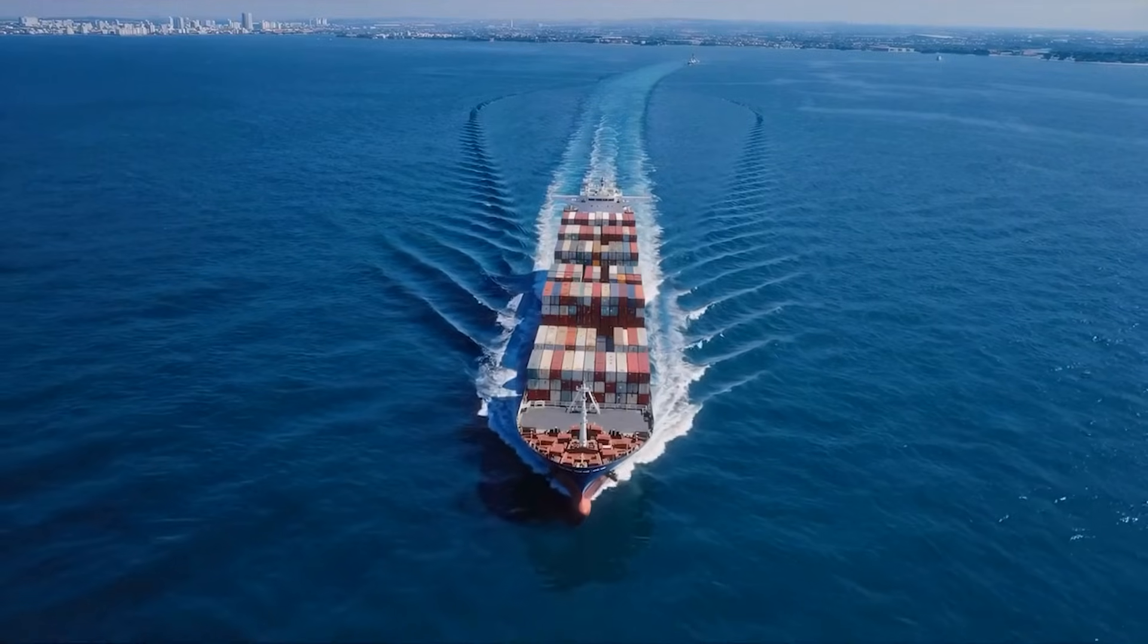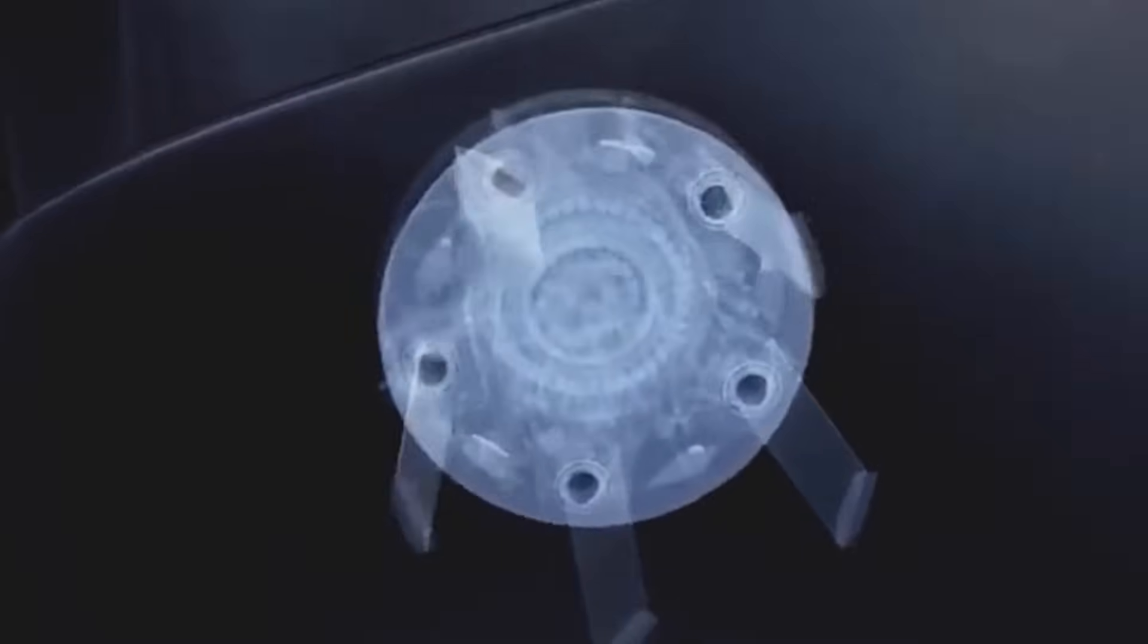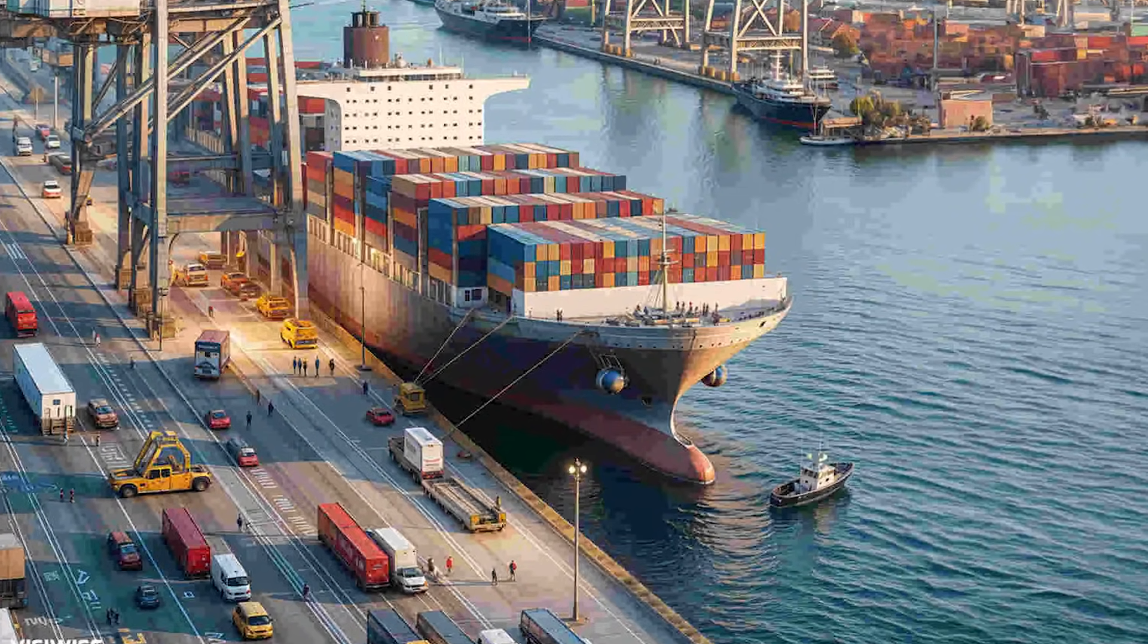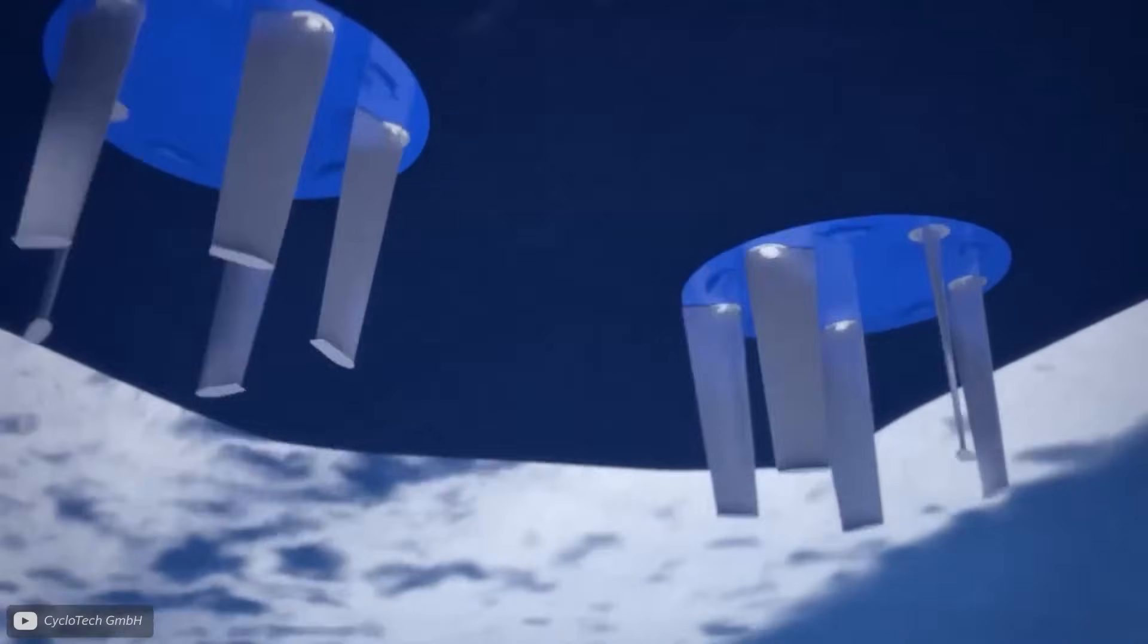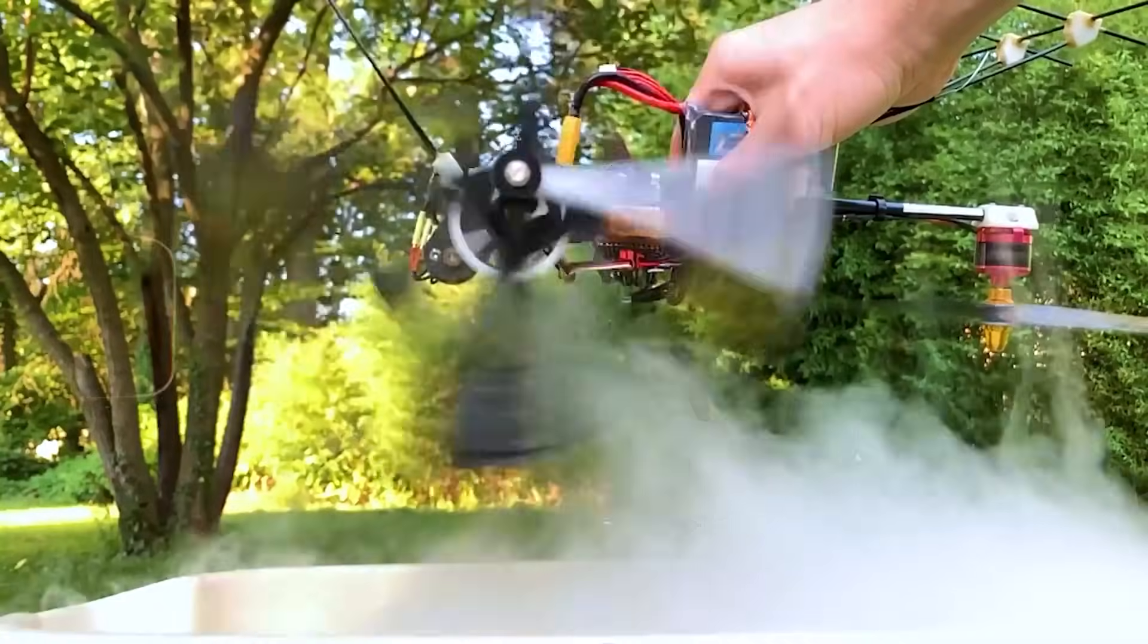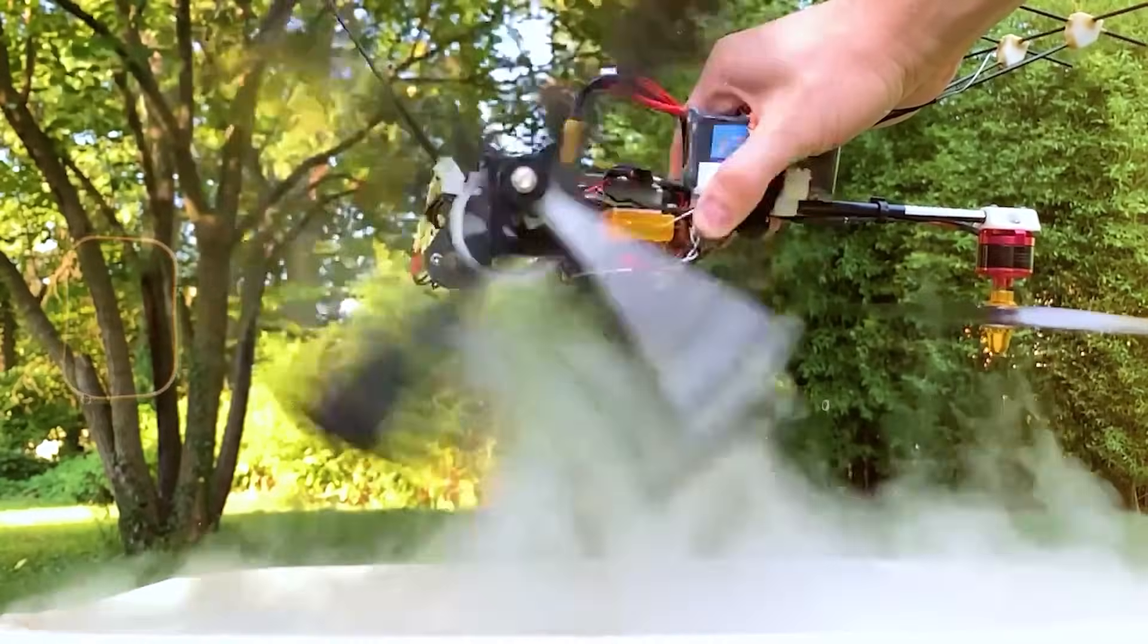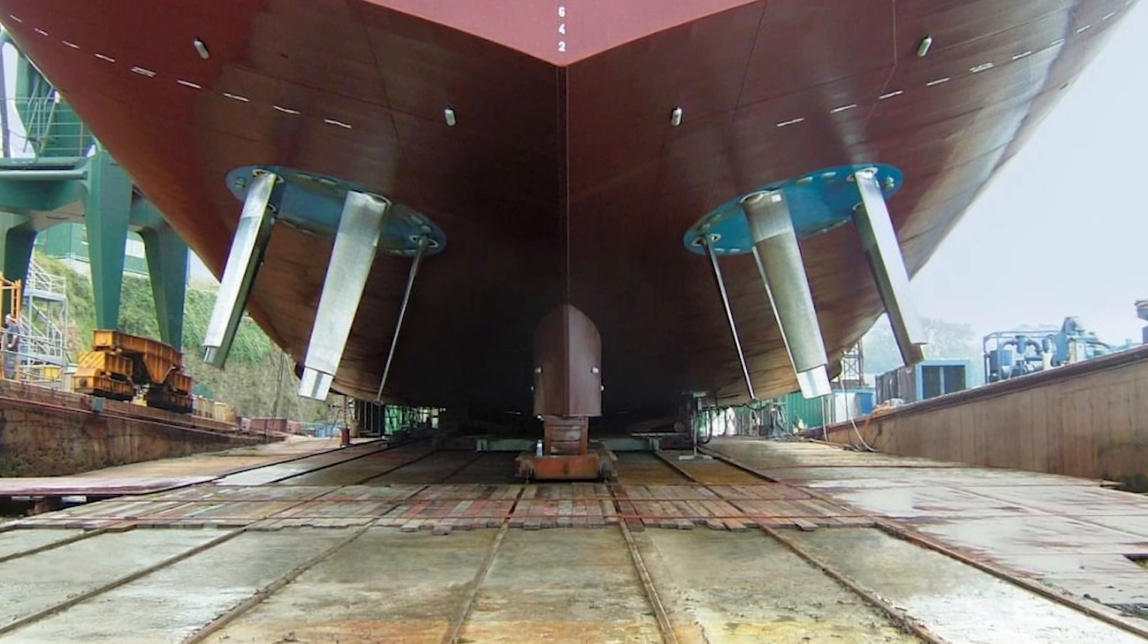The Voith Schneider propeller revolutionized how ships maneuvered. Instead of relying on rudders in forward motion, vessels equipped with this system could move sideways, rotate in place, or generate thrust in any direction instantly. Tugboats, ferries, and harbor vessels benefited enormously from this capability, especially in tight spaces where conventional propellers struggled. During World War II, the military recognized the potential of this technology, though large-scale adoption was limited by production demands and the system's novelty. After the war, its advantages became impossible to ignore. Civil ports, offshore platforms, and specialized vessels embraced the Voith Schneider propeller for its safety, efficiency, and unmatched control.